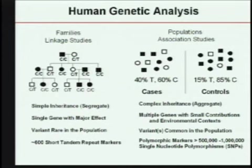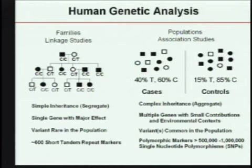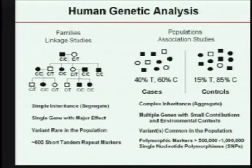Genetic strategies have been applied to human diseases for many years. Linkage was the way people started, looking at simple inheritance where things segregate in families — single genes with major effects and rare variants. Today we're very interested in common diseases that have complex inheritance; they don't show clear Mendelian patterns but do aggregate in families. There are multiple genes with small contributions, and environmental contexts that modify expression. The variants associated with disease are common, we believe.